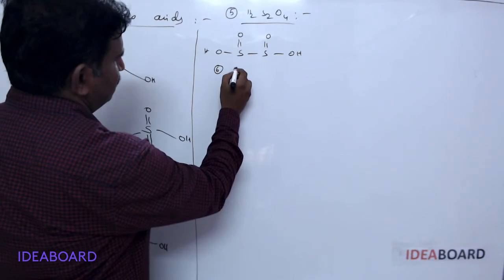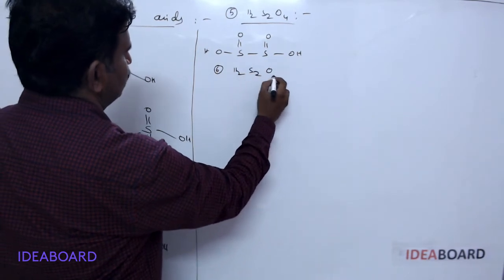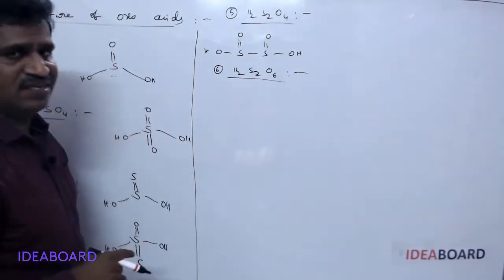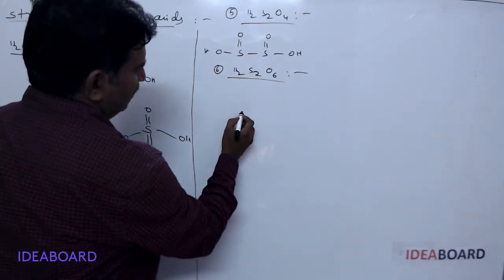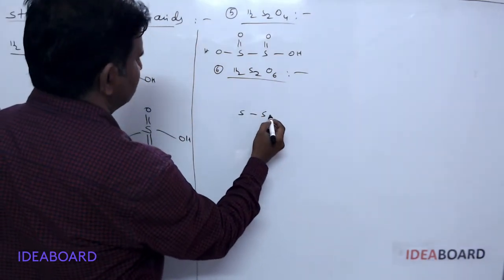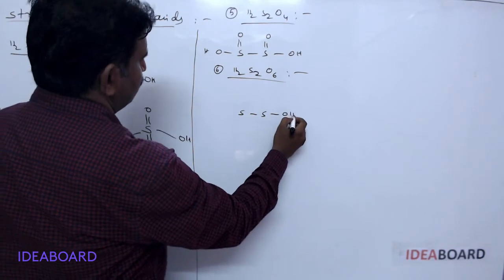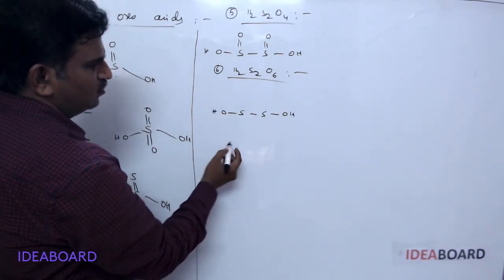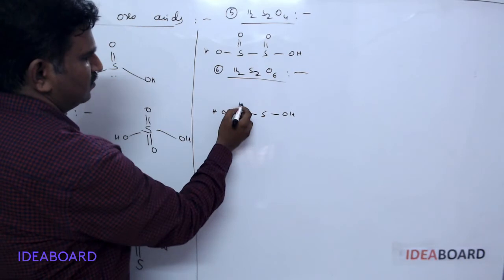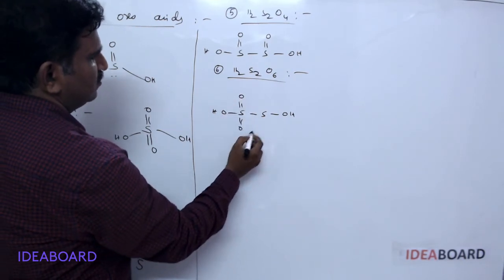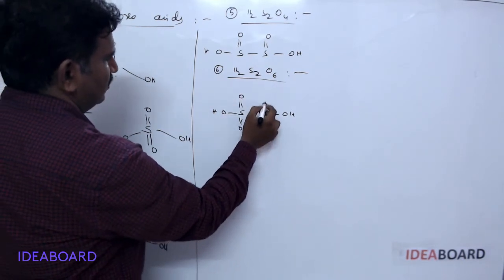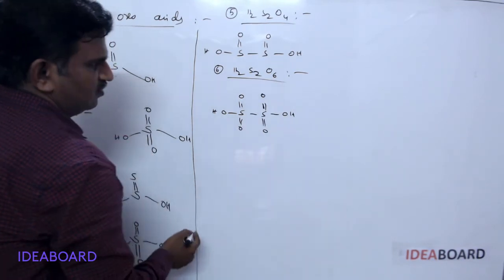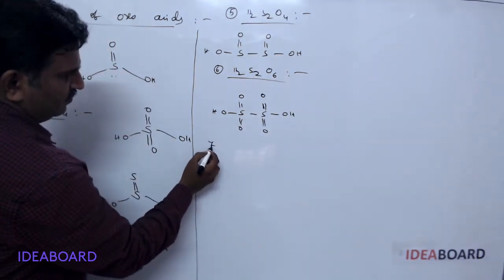The sixth structure is H₂S₂O₆, called dithionic acid. Here it is S single bond S with one OH group on each sulfur atom and four oxygen atoms total — two oxygen atoms on each sulfur as double bond oxygens.